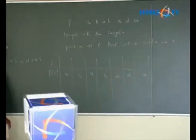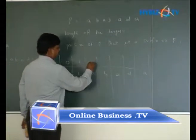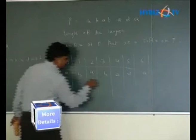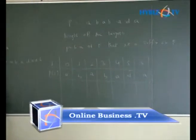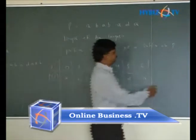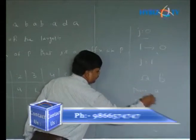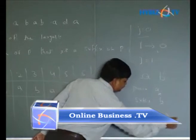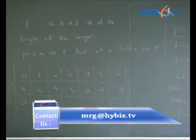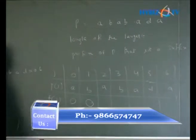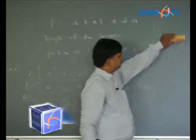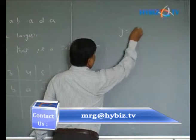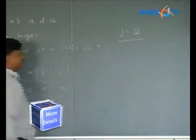First, let us consider j equal to 0. Always remember that for the first character, the default value of the failure function is 0. Now when j is equal to 2, the pattern is a b a. The prefix is a, a b; the suffix is a, b a. The matching length is 1. Therefore f of 2 maps to 1.